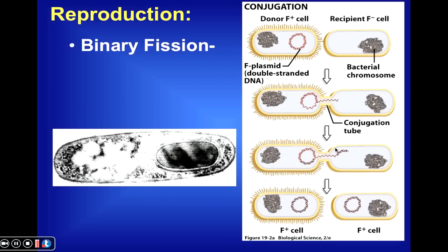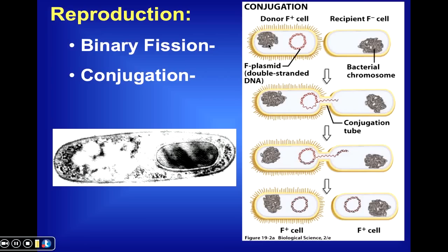A few comments about reproduction in bacteria. Bacteria typically divide by binary fission, which you might think of as very similar to mitosis. It's a little different because bacteria don't have linear chromosomes like we do, but they do have a large circular chromosome. By binary fission, the genetic material must replicate, followed by division of the entire cell itself.